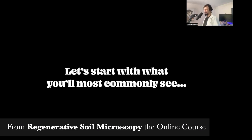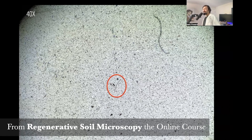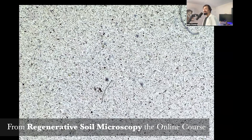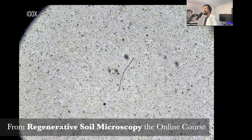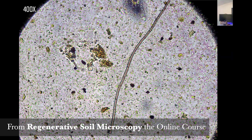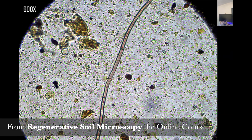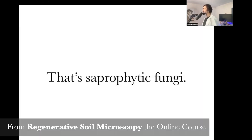Let's start there because this is at 40x. You'll see these little root-like things, these dendritic things, these twig-like, stick-like things. Let me zoom in — at 40x, this is 100x, this is 400x. You can start to see the structure, the morphological characteristics, and even more so at 600x. But that's saprophytic fungi.